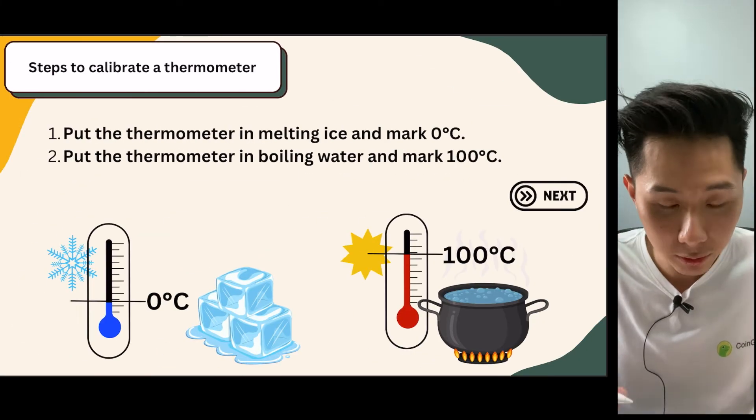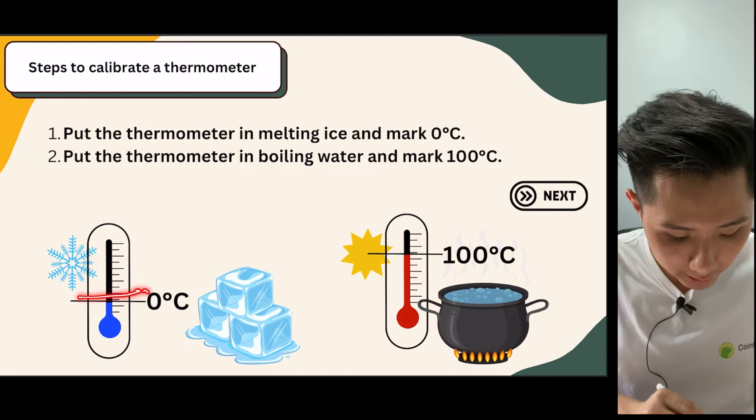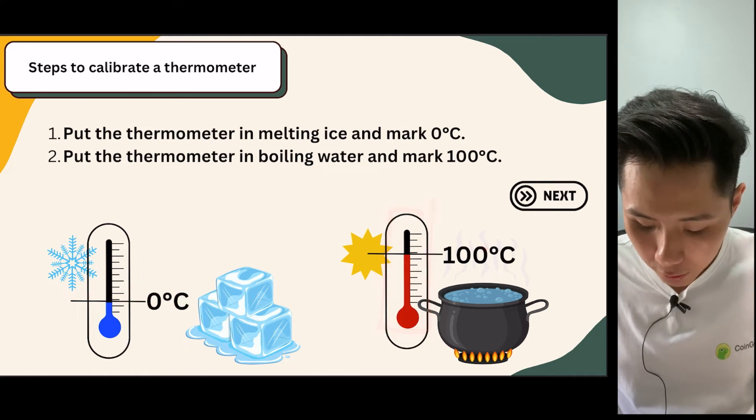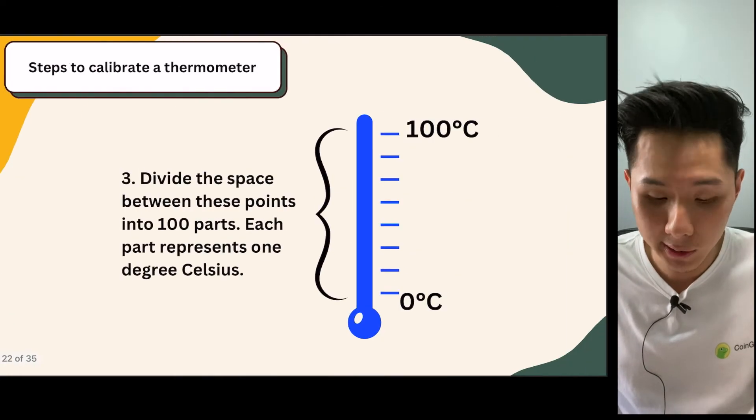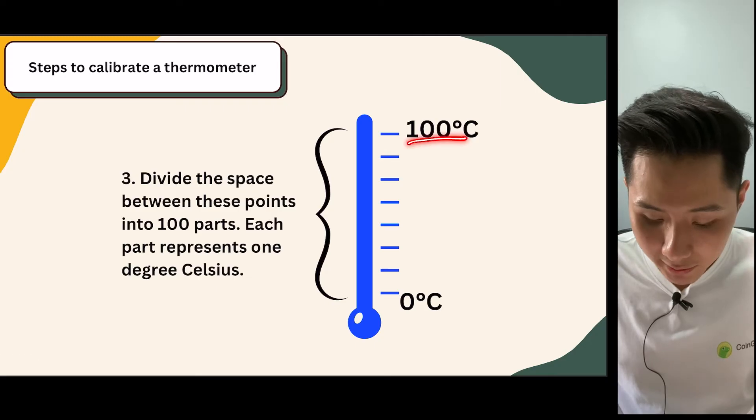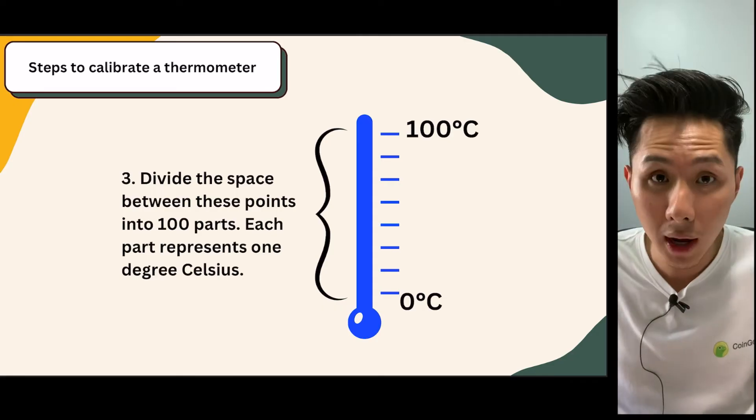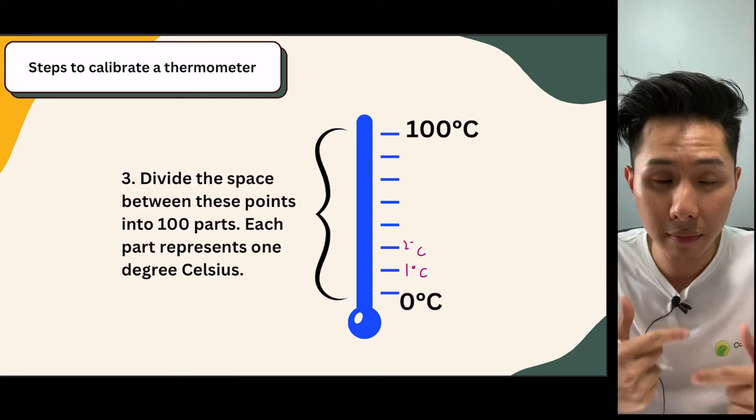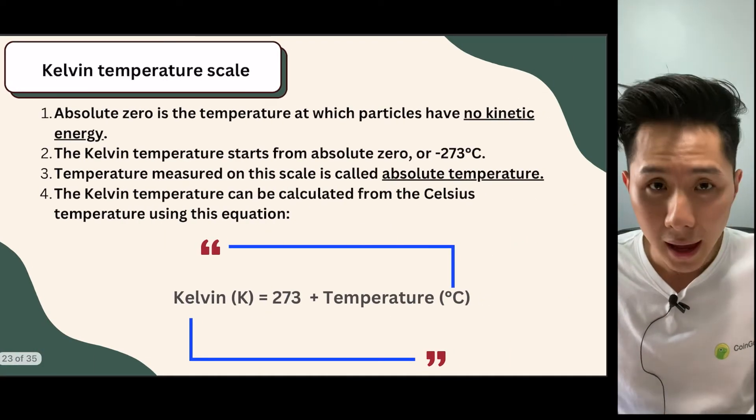And in order to calibrate the thermometer, all you need to do is just put the thermometer into ice, and then once you do that, you mark the point as zero. And then put the thermometer into hot water to mark it as 100 degrees Celsius. And once you got the point, you simply divide the difference by 100 to get the calibration. So that's how you make a thermometer from scratch if you don't have the scale.